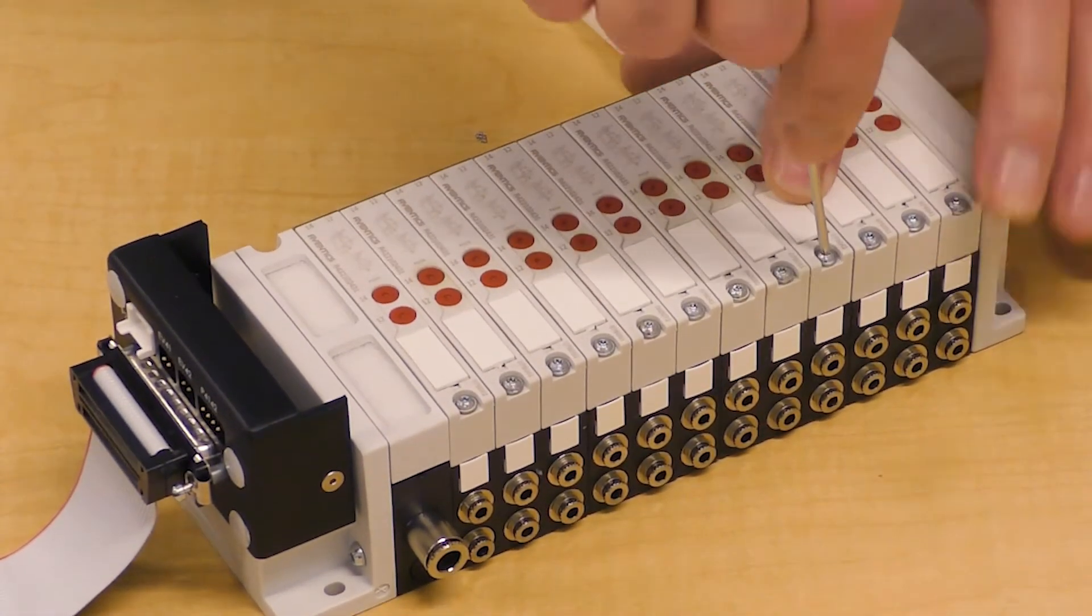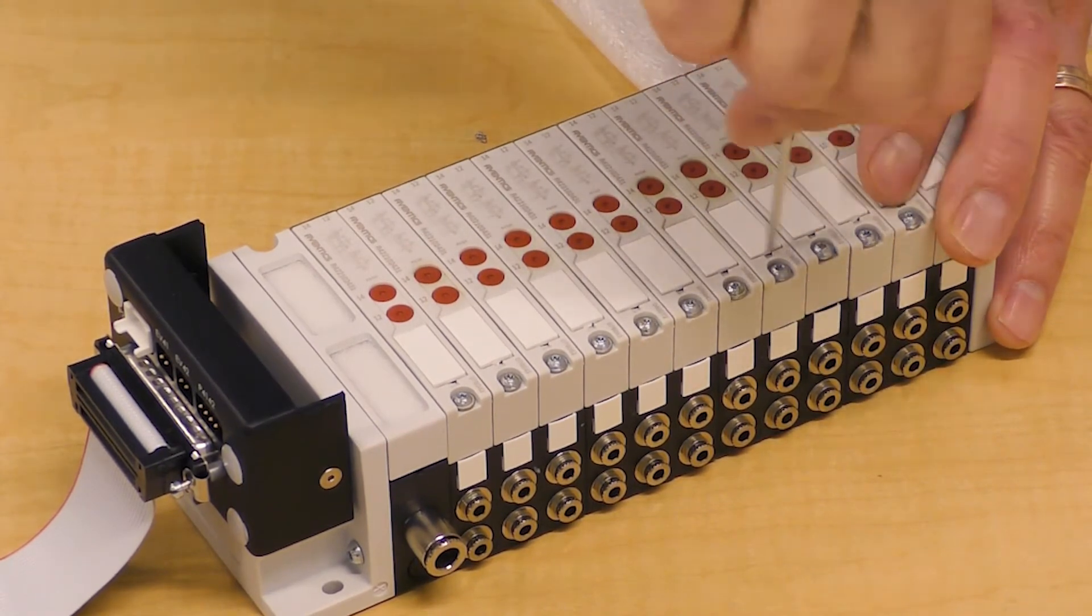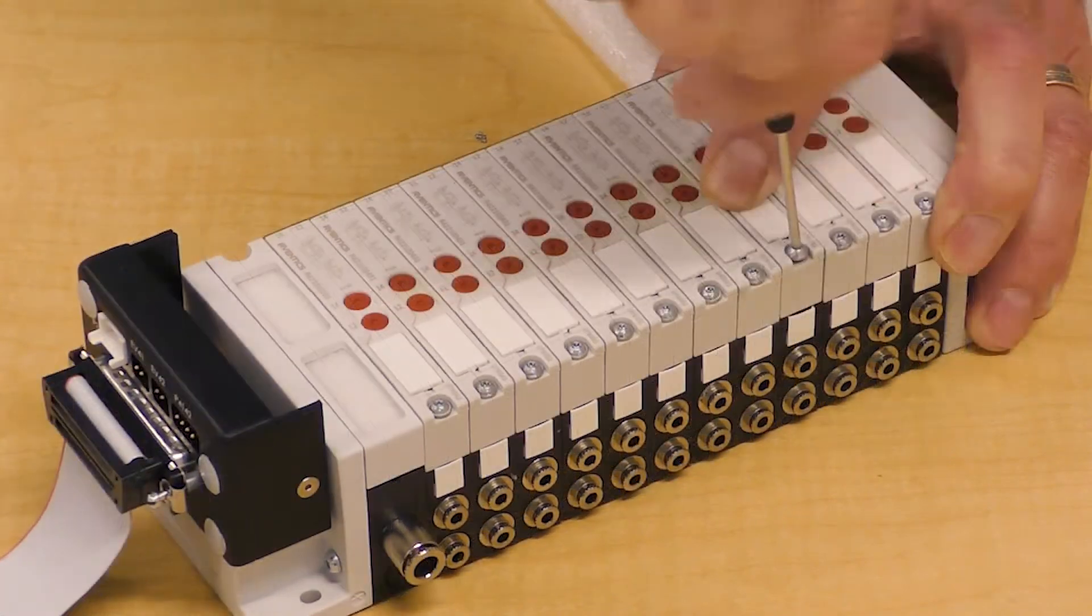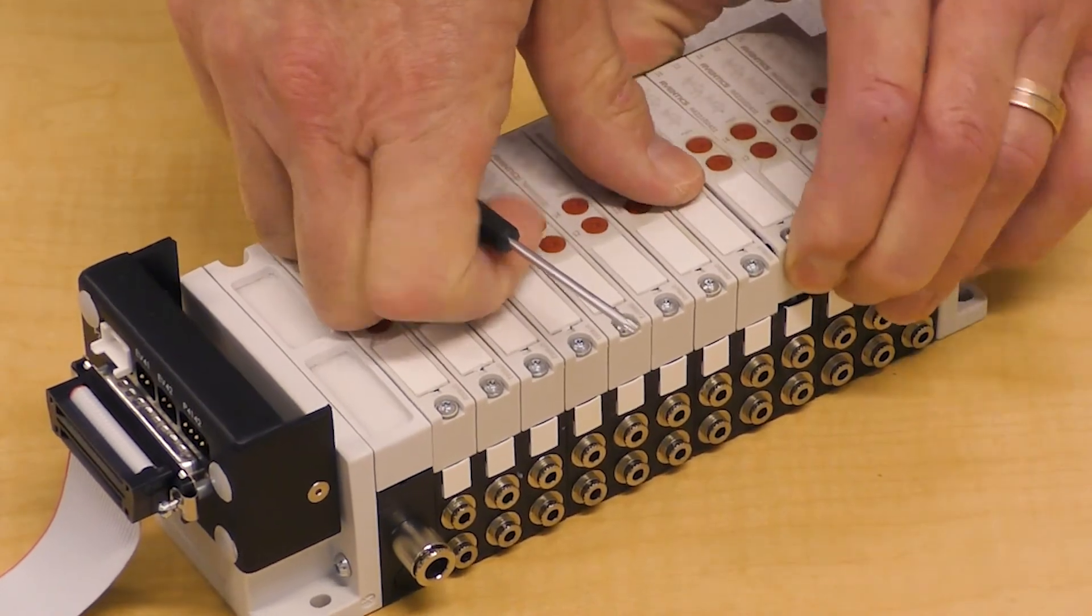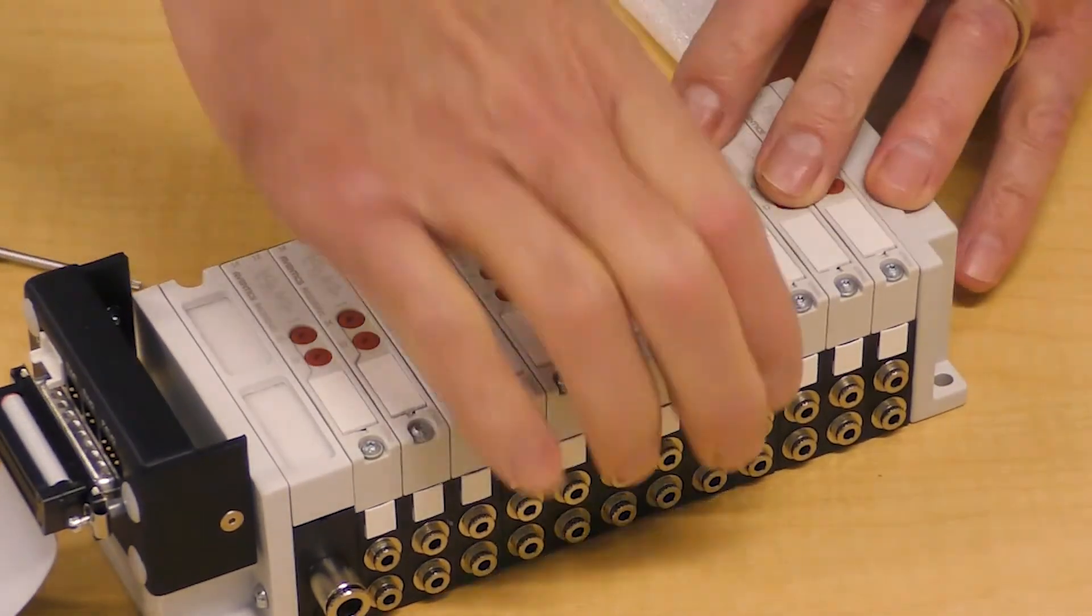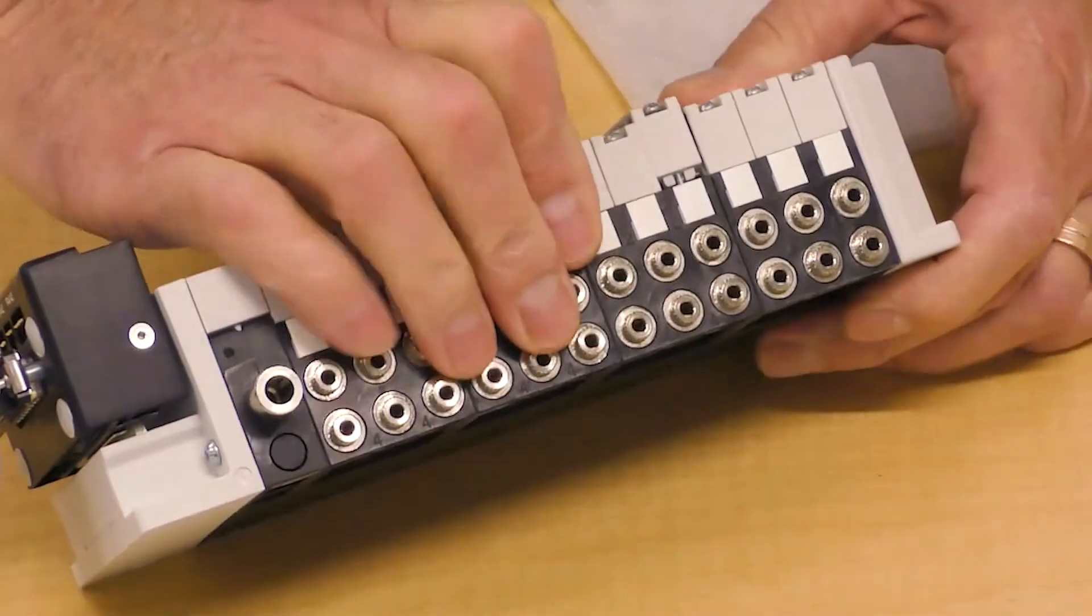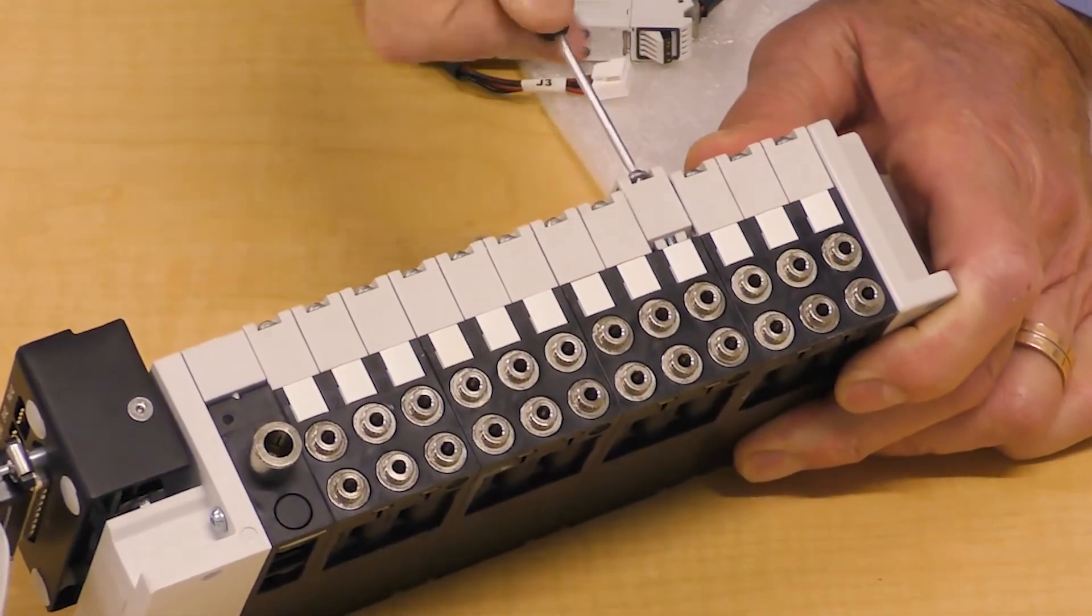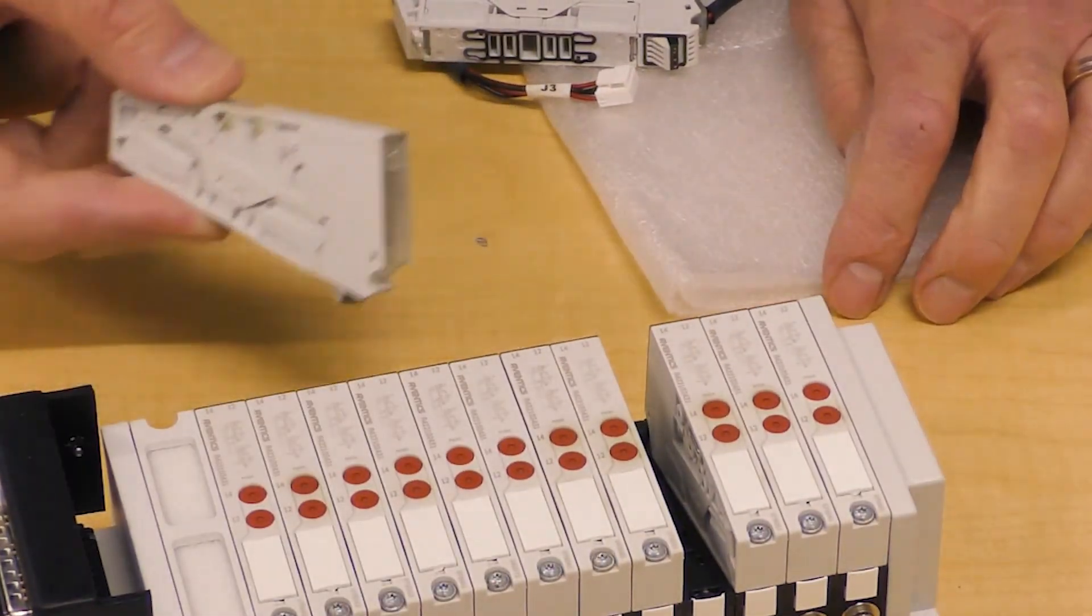We're going to remove valve 9. The screw is loose and this valve will now rotate out of its position.